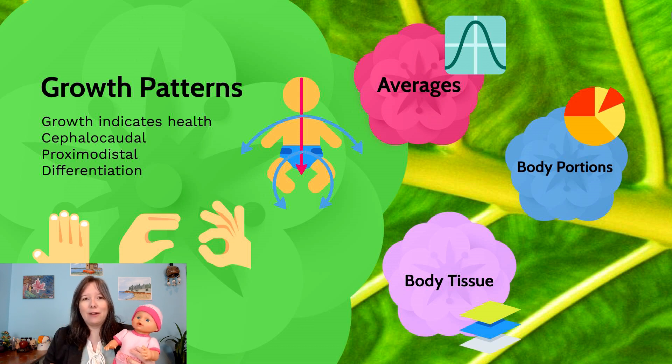And so these three patterns, cephalocaudal, proximodistal, and differentiation are important, because if an infant is not developing along these ways, let's say they are born with a relatively smaller head or larger limbs, then that may be a very precise indicator that they're going to follow an atypical developmental trajectory. There could be a developmental or genetic atypicality there that we want to be aware of from the outset. And so majority of us will follow these three patterns, but we are looking for exceptions to the rule to help us understand if there's any delayed growth or any exceptional patterns.